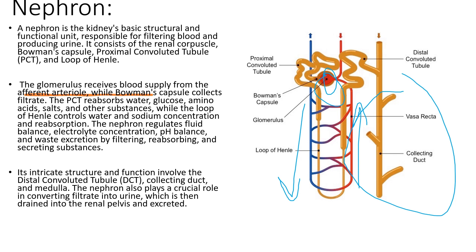From the renal pelvis, the urine will then enter the ureter, and will be stored in the urinary bladder to be excreted.